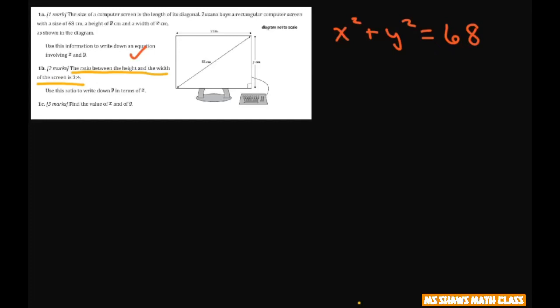So we're saying the height is y is to x. So you have to read this in order. Height to width. Height to width is going to equal 3 divided by 4.